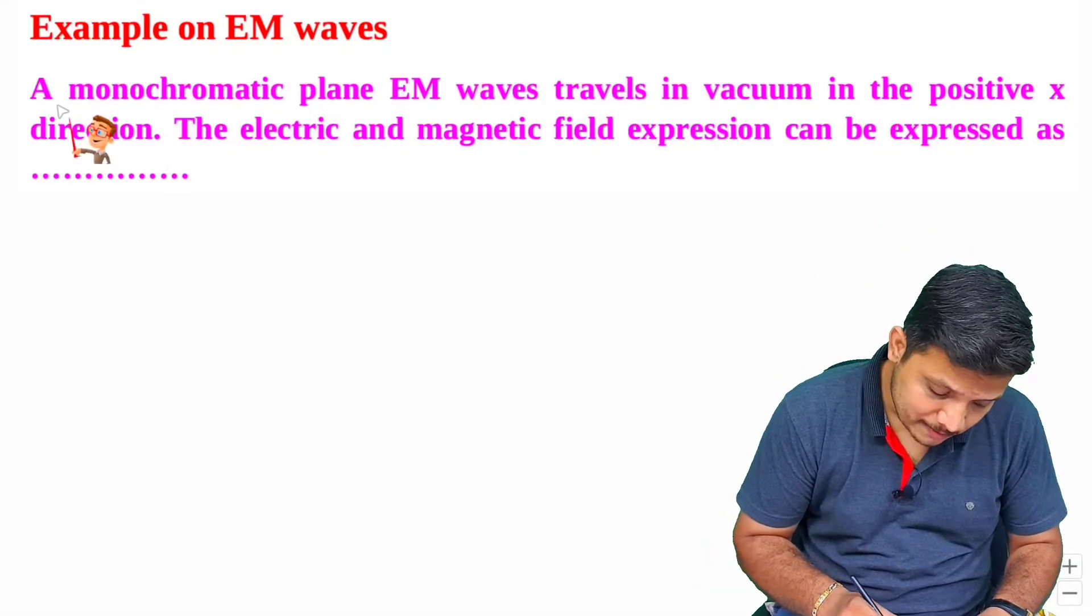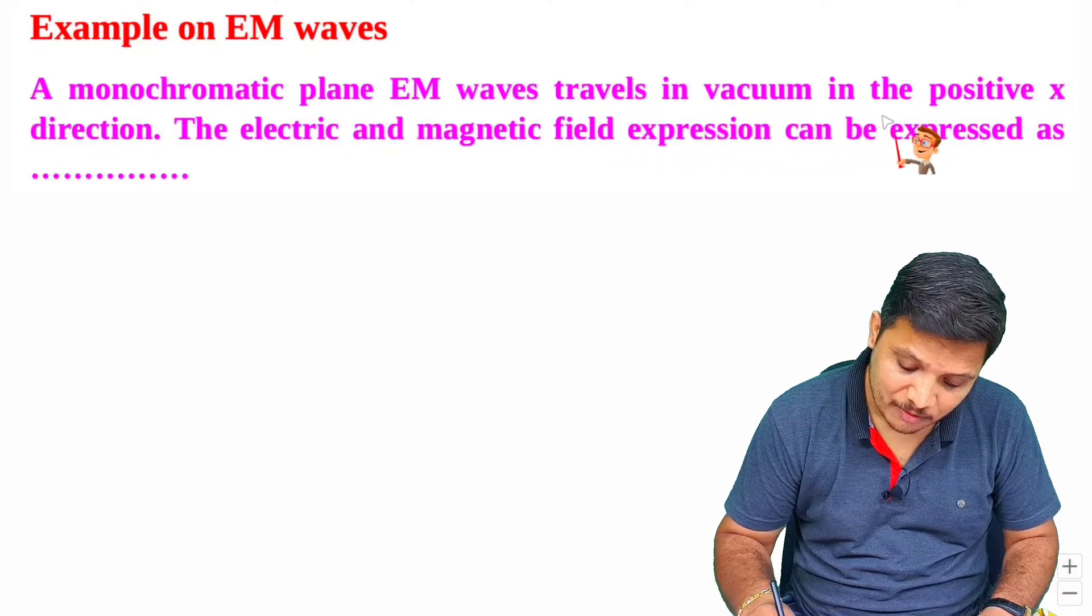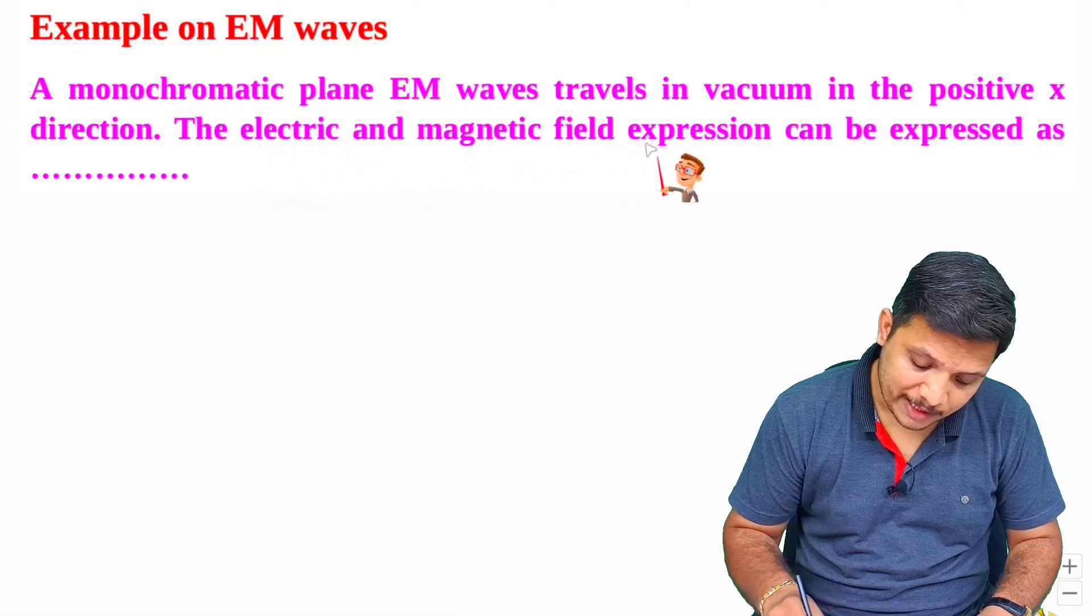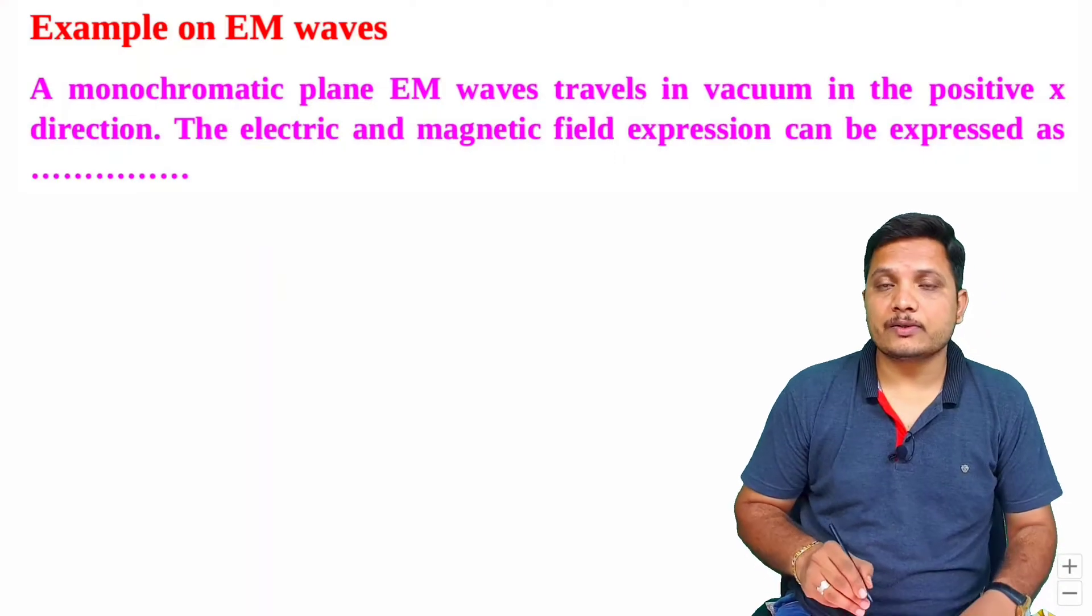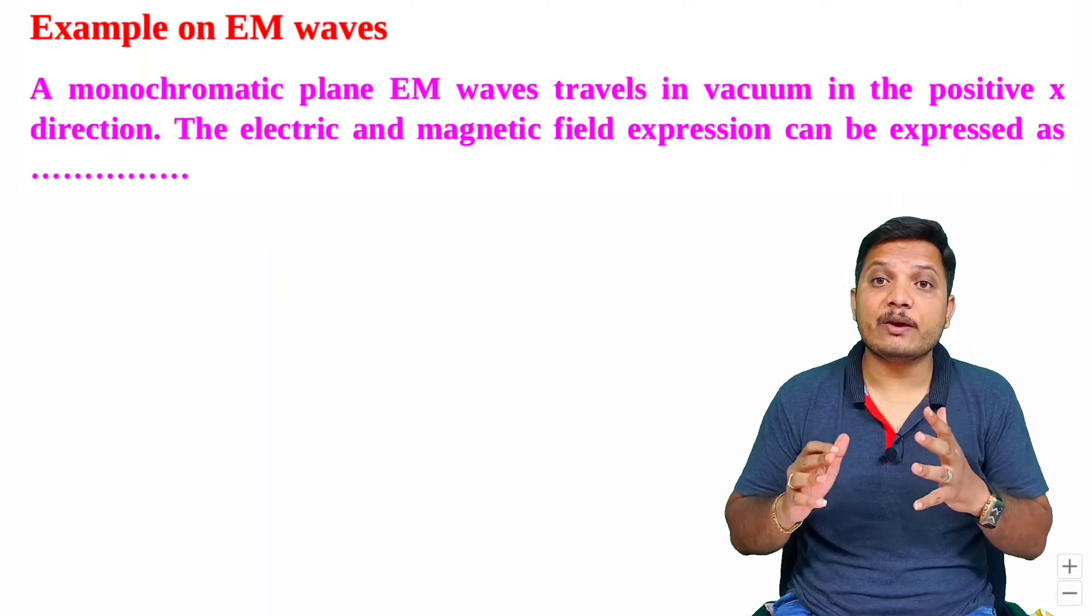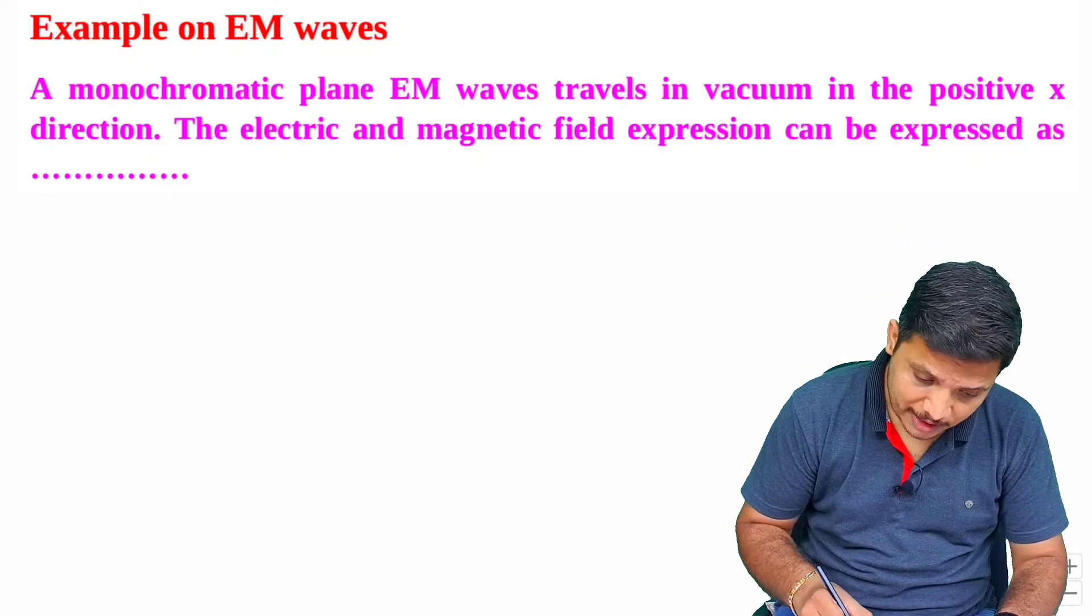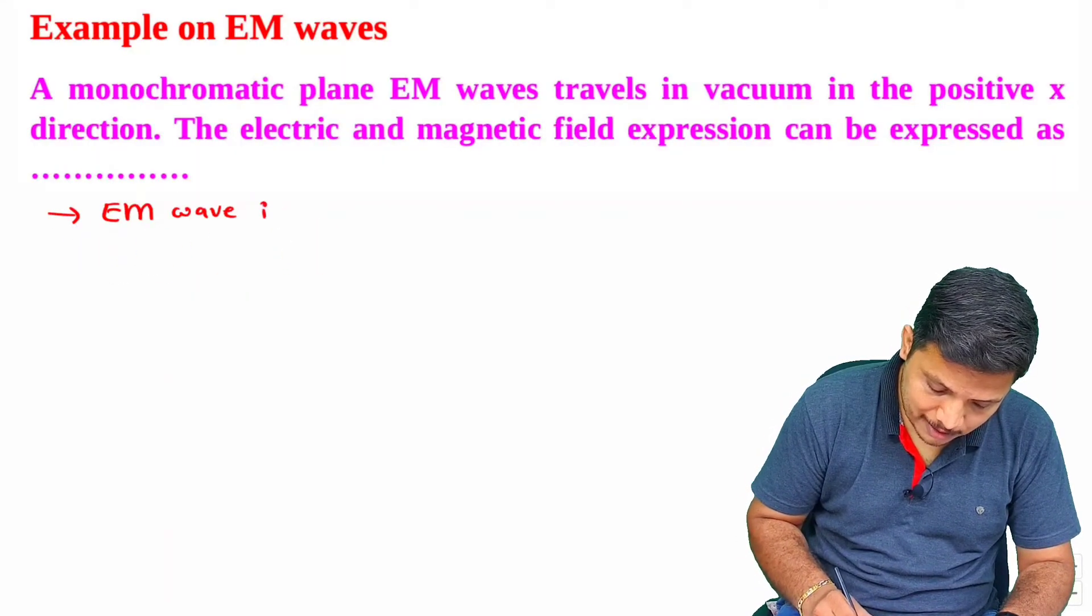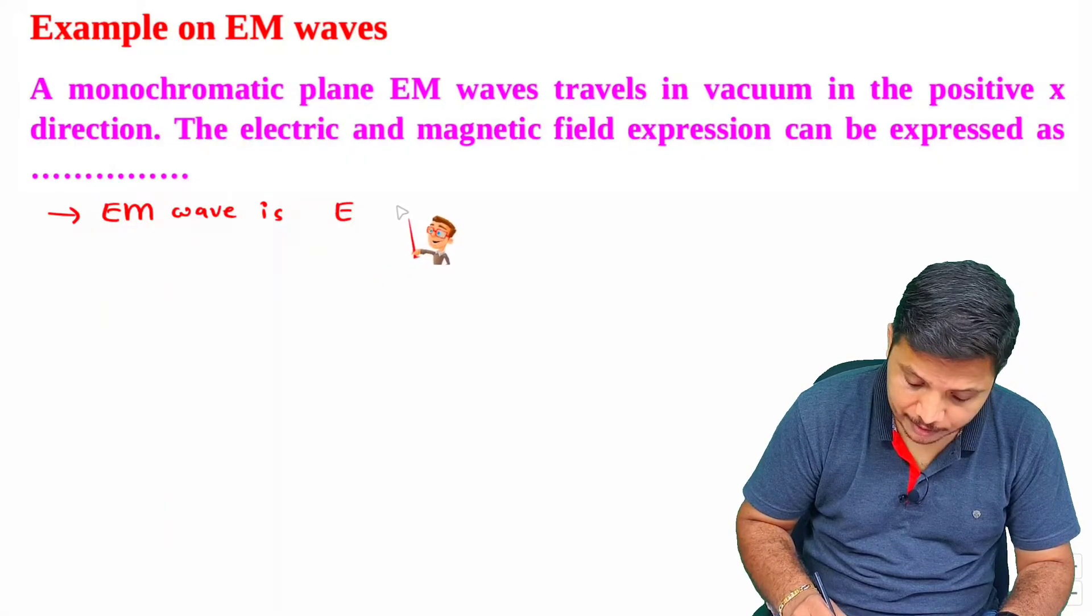So here the question is: a monochromatic plane EM wave travels in vacuum in positive x direction. The electric field and magnetic field expression can be expressed as shown. So see here what is given? Here it is given that EM waves are traveling in positive x direction. So one should know what is EM wave? EM wave is a combination of E field and magnetic field.